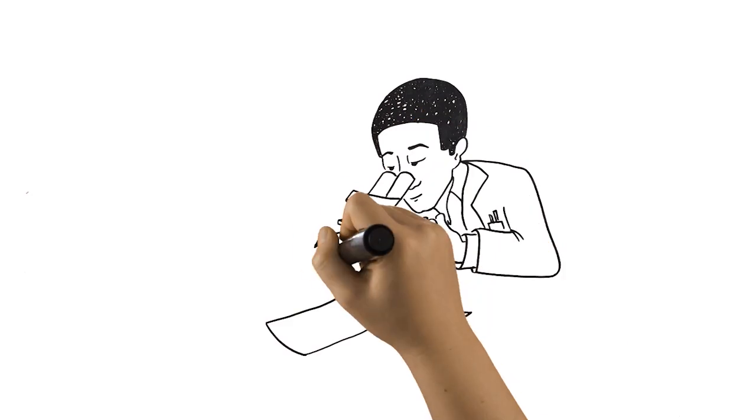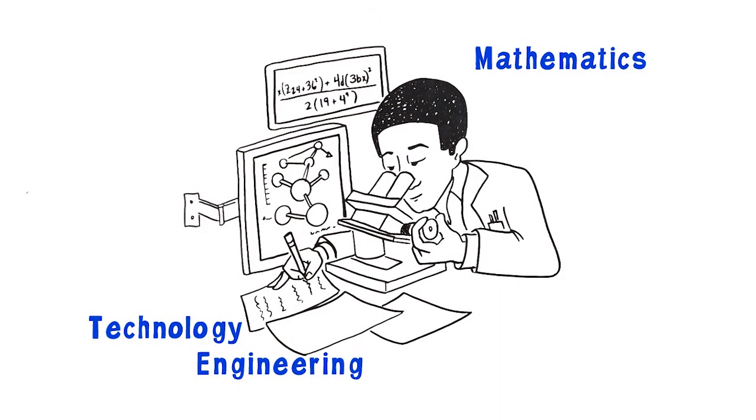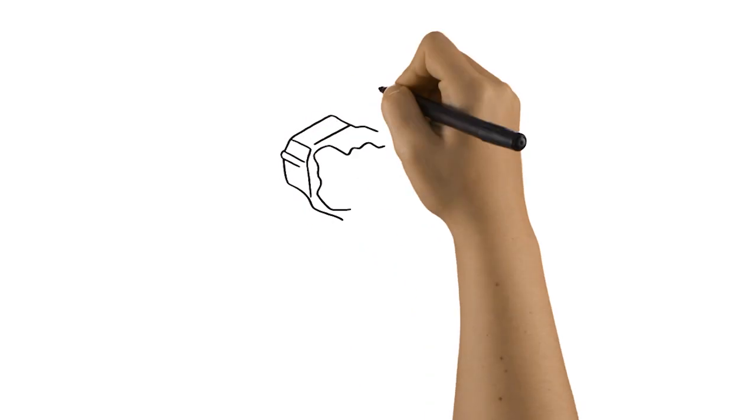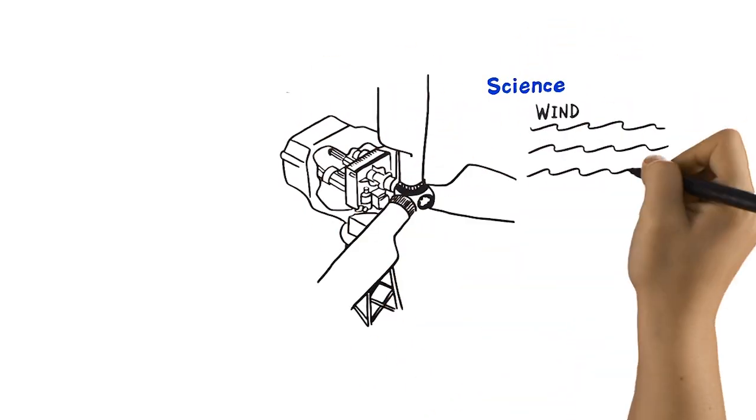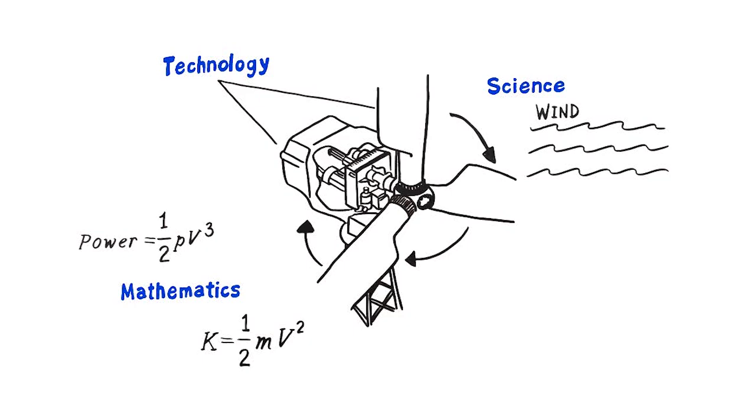After all, in the real world, science relies on technology, mathematics, and engineering. And engineering depends on findings from science, the application of mathematics, and the use of technological tools.